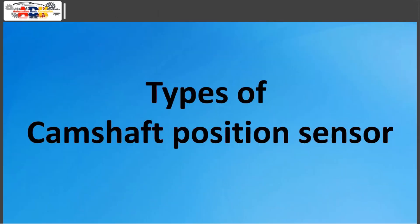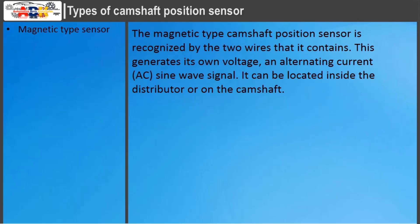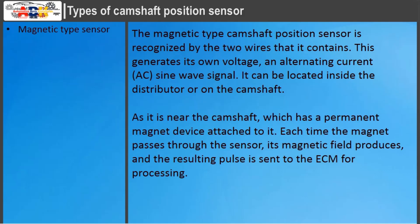The magnetic type camshaft position sensor is recognized by the two wires that it contains. It generates its own voltage and alternating current sine wave signal. It can be located inside the distributor or on the camshaft, near a permanent magnet device attached to it. Each time the magnet passes through the sensor, its magnetic field produces a pulse that is sent to the ECM for processing.